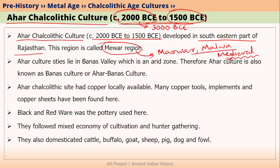Especially in medieval Indian history, because in medieval India we will talk about the history of Rajputs, and in the history of Rajputs, Rajasthan becomes very prominent. We will study different areas in Rajasthan, as well as the adjoining areas of Madhya Pradesh and Gujarat, and we will learn about Mewad, Marwad, Malwa, Hadoti, and other regions.